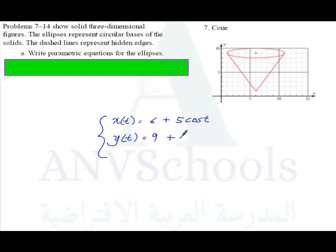y equals 9 plus 1, which is the radius on the vertical part. So y equals 9 plus sine t.